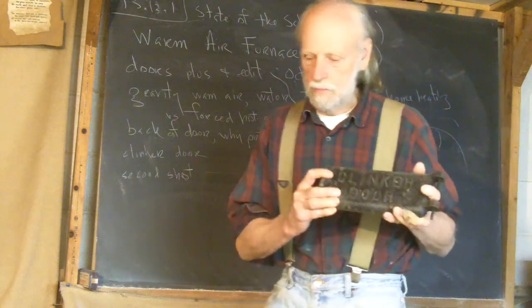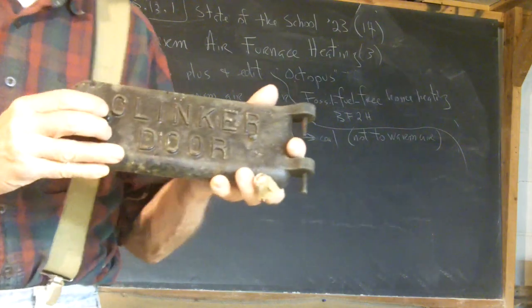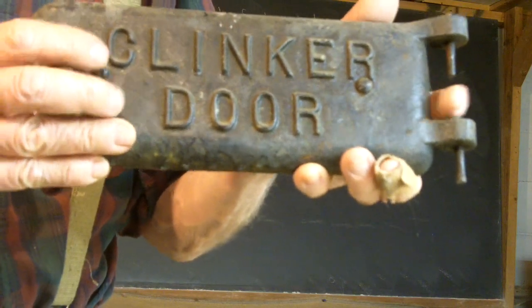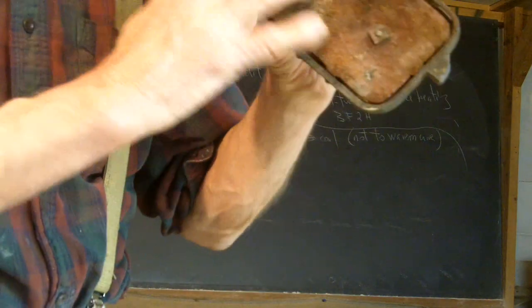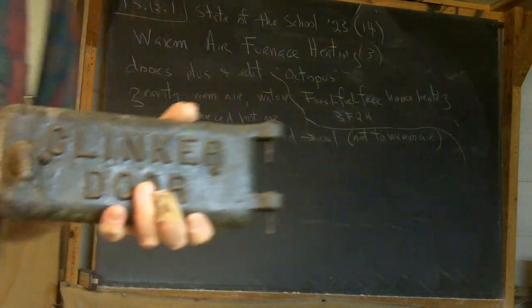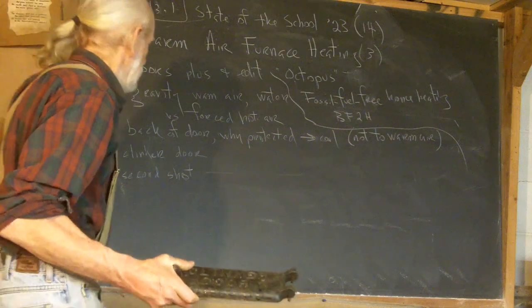A clinker door, it says. A clinker is what you get when you burn coal. You get ashes and you get clinkers. And the back is also protected as well. It's smaller, which is probably the reason that I didn't have to pay as much.